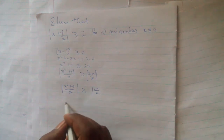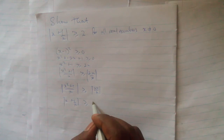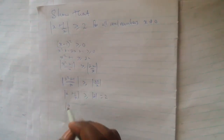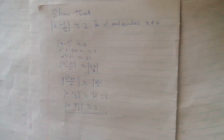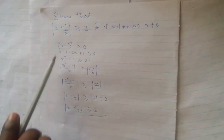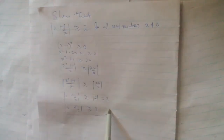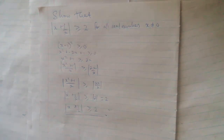Simplifying this, we have the modulus of x plus 1 over x greater than or equal to the modulus of 2, which is equal to 2. So this deduces to x plus 1 over x is greater than or equal to 2, which is what we are supposed to show. Since we have shown this is equivalent to (x minus 1) squared greater than or equal to 0, and we know that is true for all real numbers, hence this statement is also true for all real numbers.